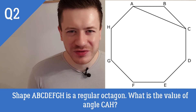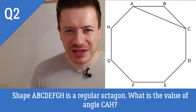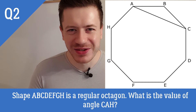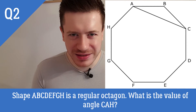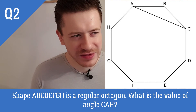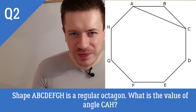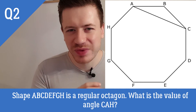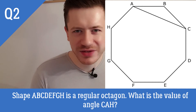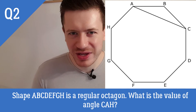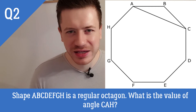First, we use the magic formula to find the exterior angle, even if there are no exterior angles visible in the diagram. 360 degrees divided by 8 sides — it's an octagon — gives us 45 degrees. So the exterior angle is 45. From there, we find the interior angle: 180 minus 45 gives us 135 degrees for the interior angle of the octagon.